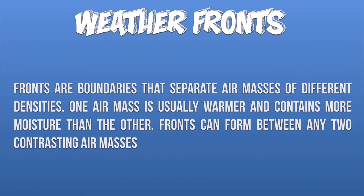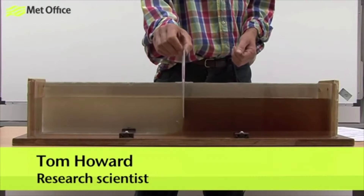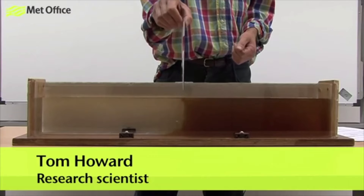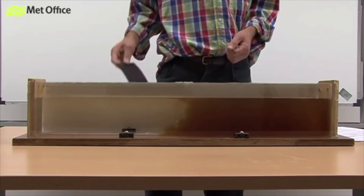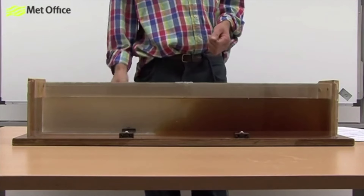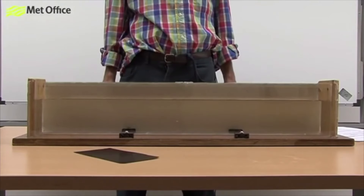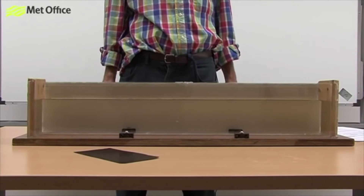I want to show you a quick experiment that was done to represent how warm and cold air behave. It will give you a good foundation for everything we're going to look at in the next couple of images. In this film, we'll see a demonstration that will help show what happens when warm air meets cold air in the Earth's atmosphere. We'll use water to simulate the behavior of the air.